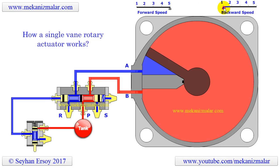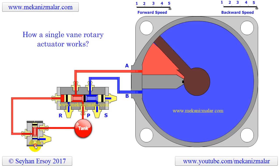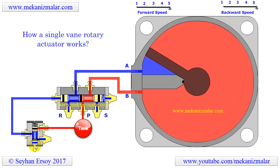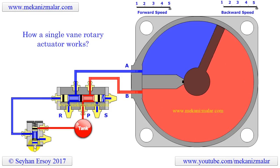More importantly, rotary actuators generate constant torque on the output shaft at all times, which cannot be achieved in most cylinder-based actuators. However, a rotary actuator is usually less efficient than its cylinder-based counterparts and might be more expensive.